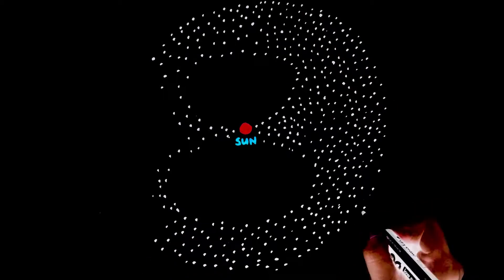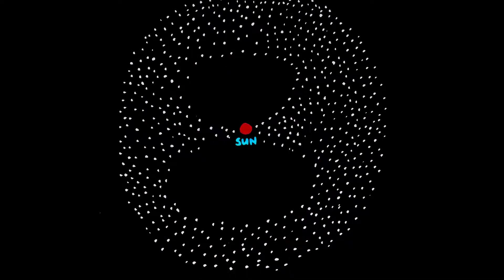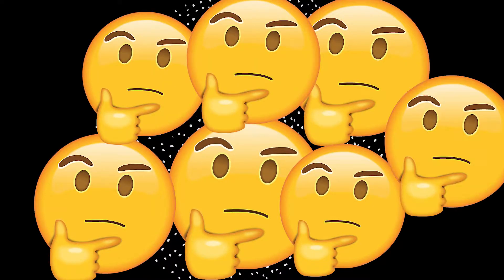Everything that is known about the Oort Cloud is based on theoretical computer models and some intelligent guesses about the origin of long-period comets. But how do we know that it's there without seeing it?